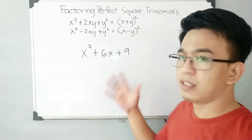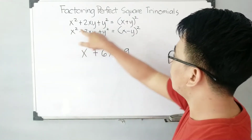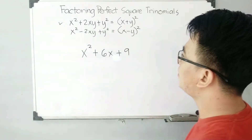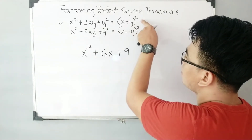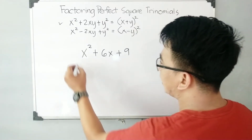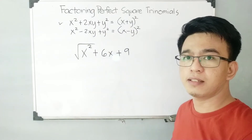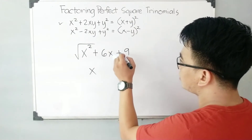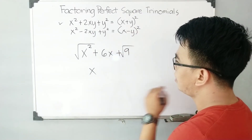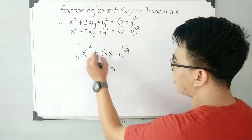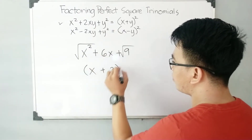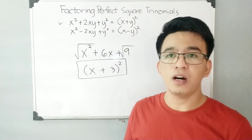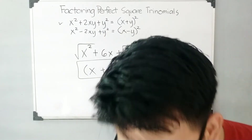To find the factors again of this expression using the first pattern — x squared plus 2xy plus y squared equals x plus y raised to the second power — get the square root of the first term: square root of x squared is x. Get the square root of 9, which is 3. Copy the operation of the middle term, plus, and raise to the second power. So the factors are x plus 3 raised to the second power. That's how easy it is.